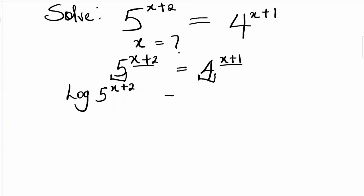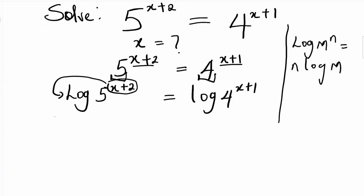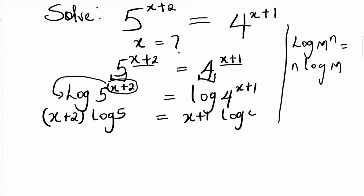So we take log of 5^(x+2) is equal to log of 4^(x+1). The reason why we took the logarithm is that we know from the law of logarithm that whenever we have log of m to the power of n, we can write it as n·log(m). So this allows us to multiply the power to the log — multiply (x+2) to log 5, and this is equal to (x+1) times log 4.